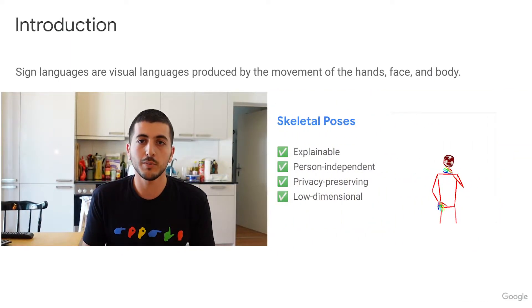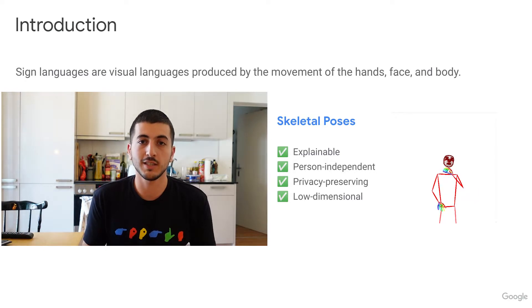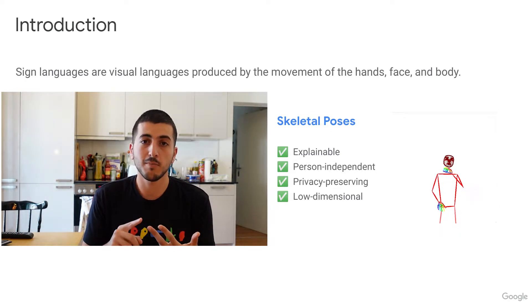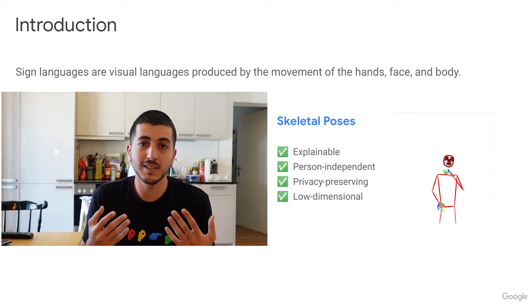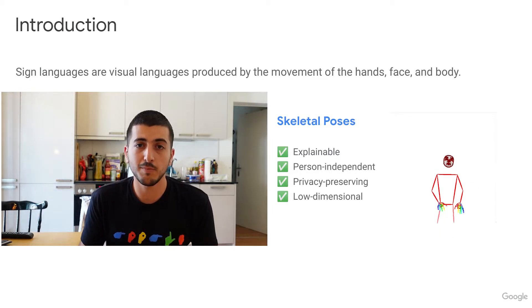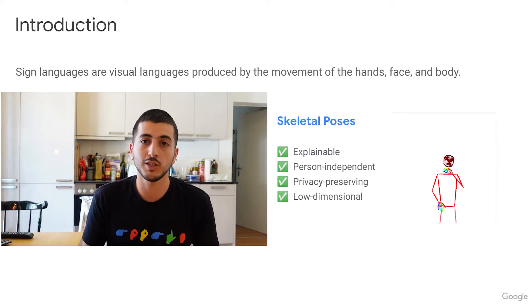In an attempt to abstract over the video information, skeletal poses have been suggested as an explainable, person-independent, privacy-preserving, and low-dimensional representation that provides the signer's body pose and information on how it changes over time. Skeletal representations generalize over an individual's appearance or background, allowing us to focus on the recognition of motion.